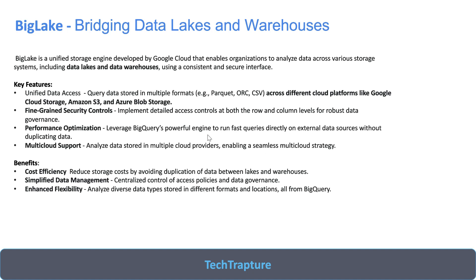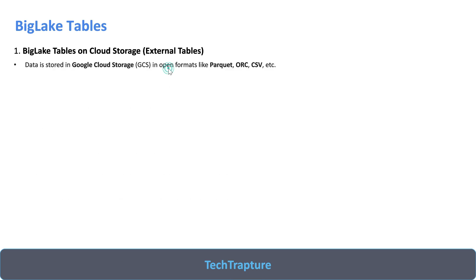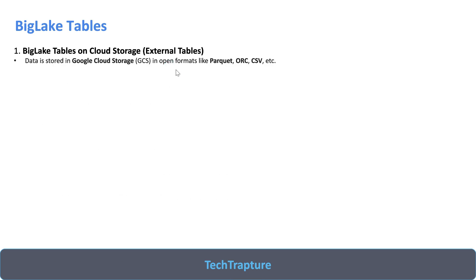BigLake tables are external tables that query data from any of the three sources. There are two types: BigLake tables on Cloud Storage, which are similar to external tables with data in Google Cloud Storage in formats like Parquet or CSV, enabling schema-on-read access useful for semi-structured data with fine-grained access control.